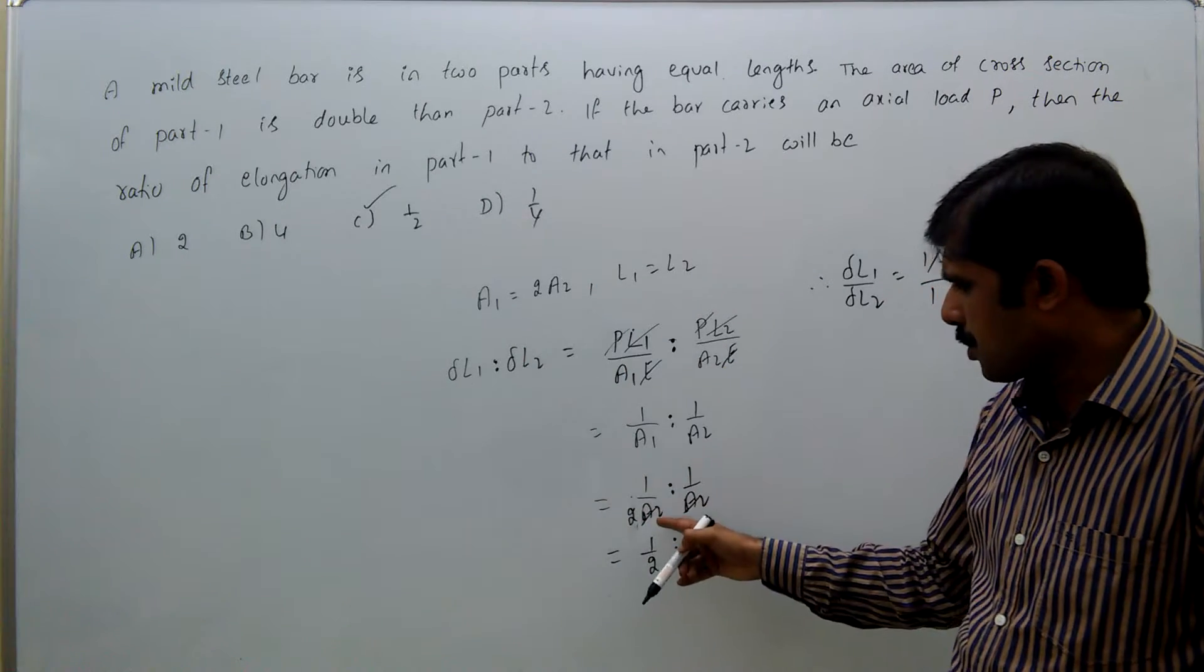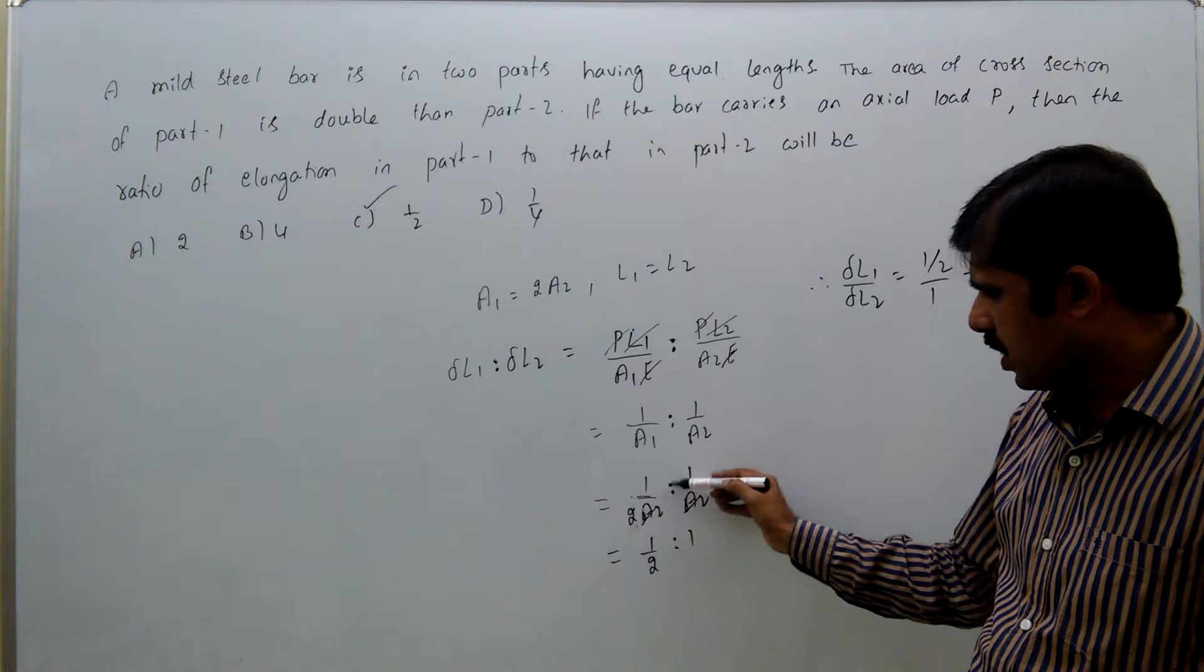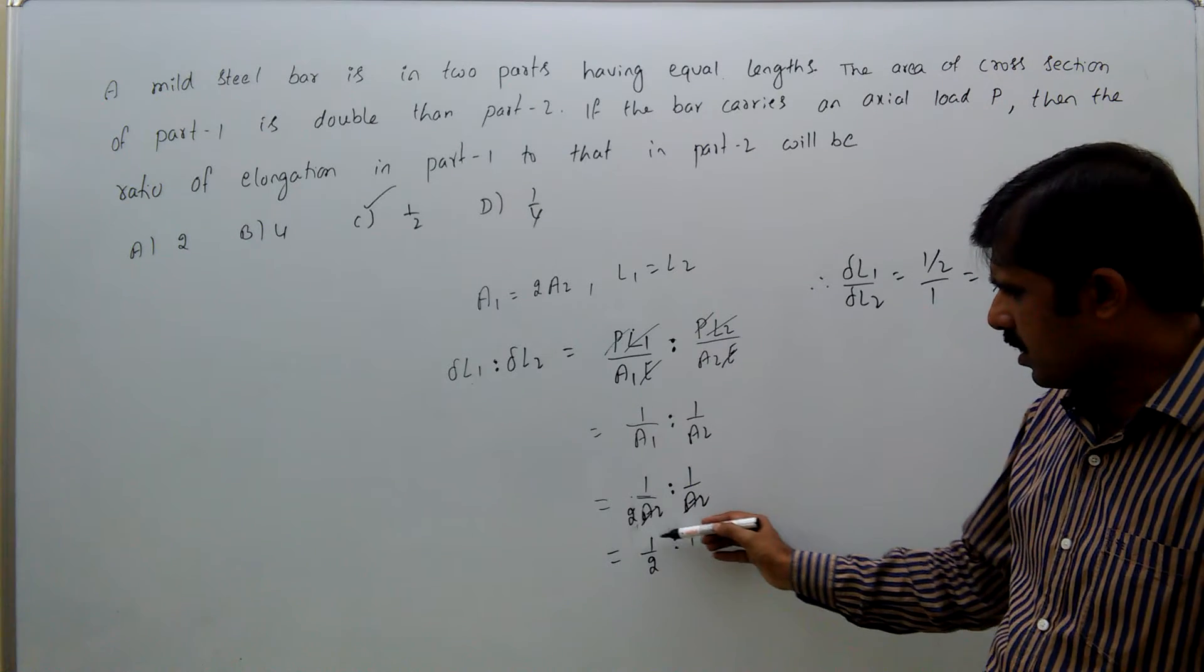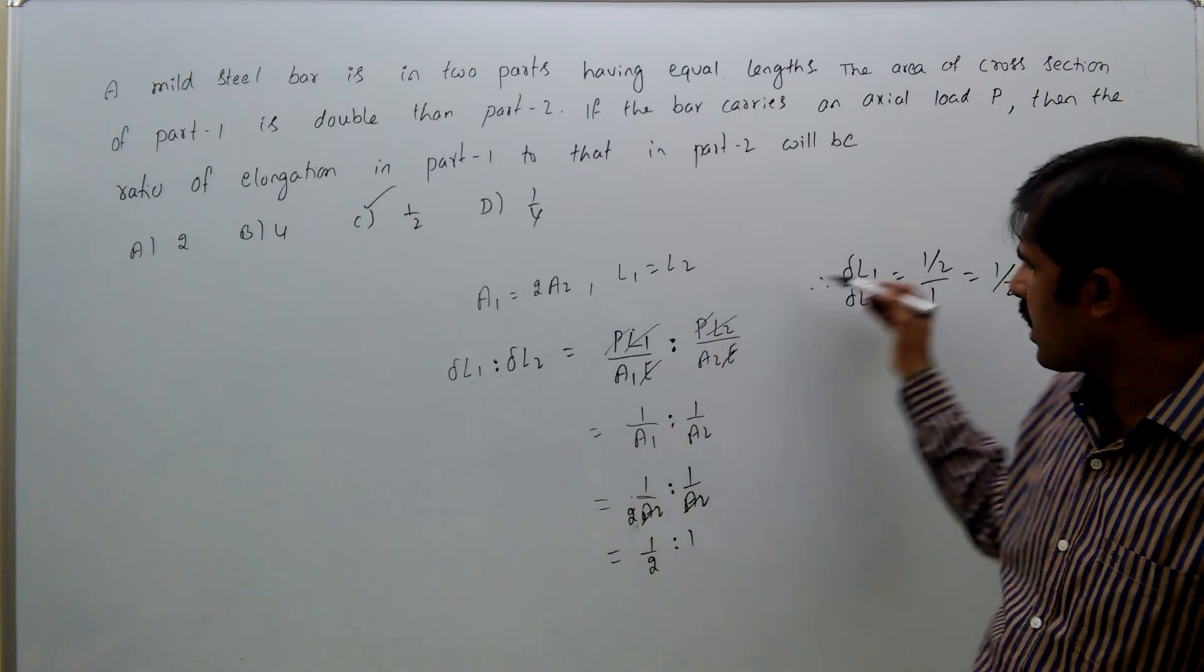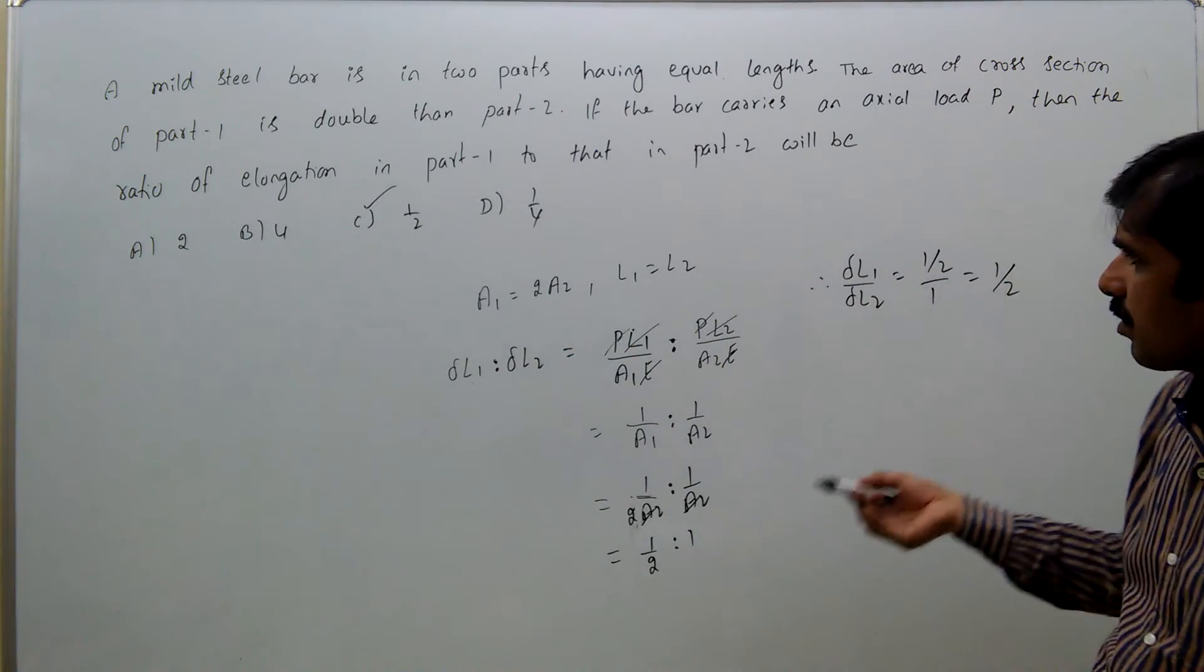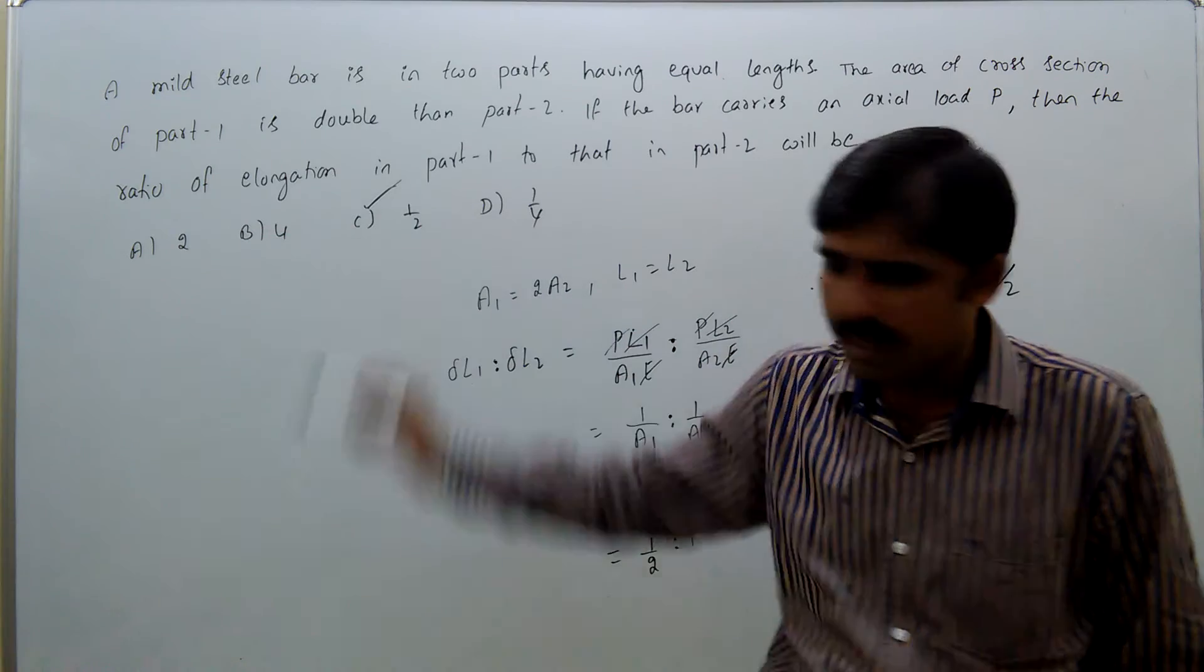A1 is 2 times A2. Substitute here: 1/(2A2) to 1/A2, that is half to 1. Because A2 gets cancelled, half to 1. That means ΔL1/ΔL2 = 1/2 by 1, that is 1/2. So option C is correct.